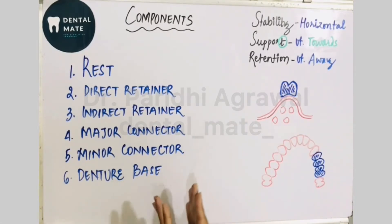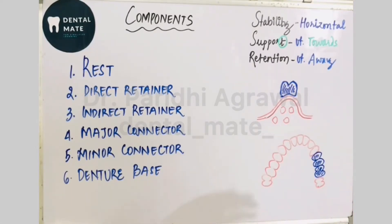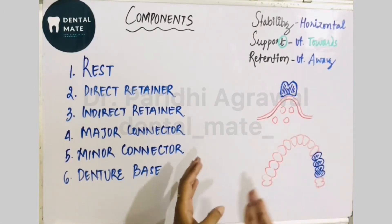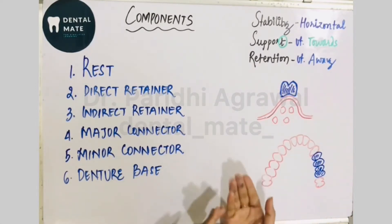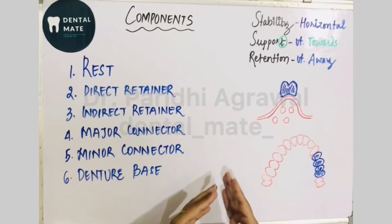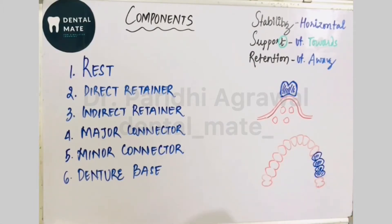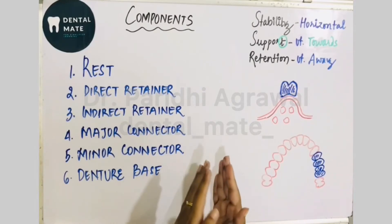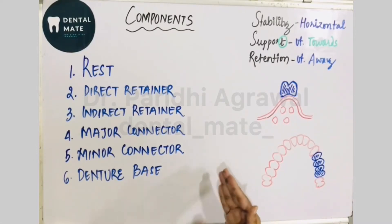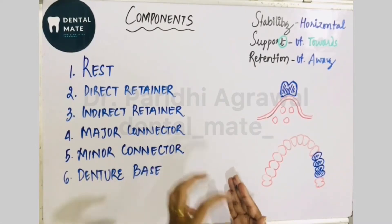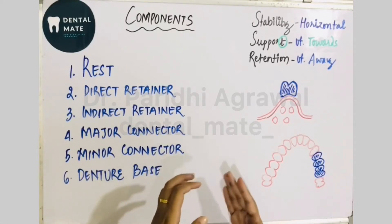We'll also cover the components of the removable partial denture. First, let's talk about stability, support, and retention. Whenever we plan a prosthesis in the oral cavity, there are two different types of forces which can dislodge it. The horizontal forces on the prosthesis could come either from the buccal mucosa — that is, the cheek muscles — or from the pressure of the tongue.